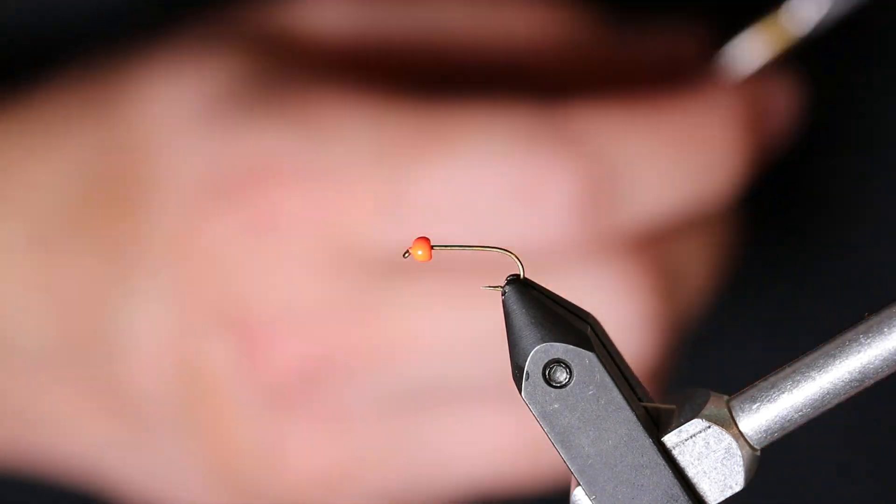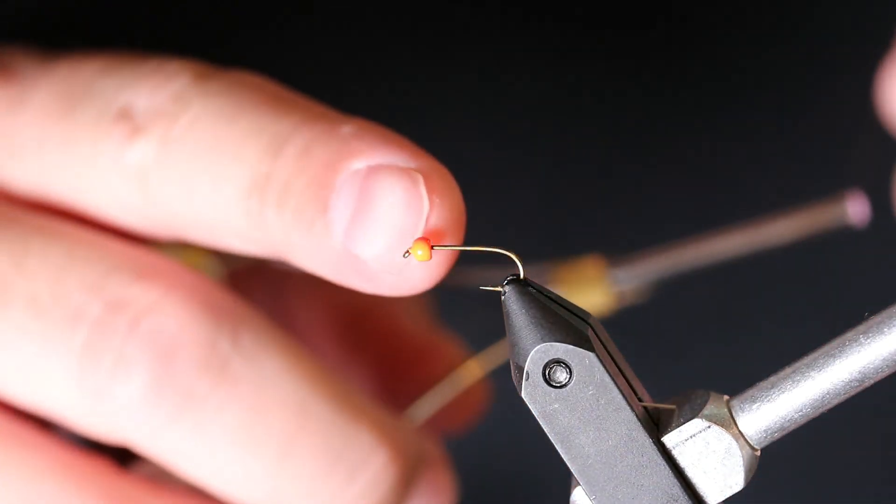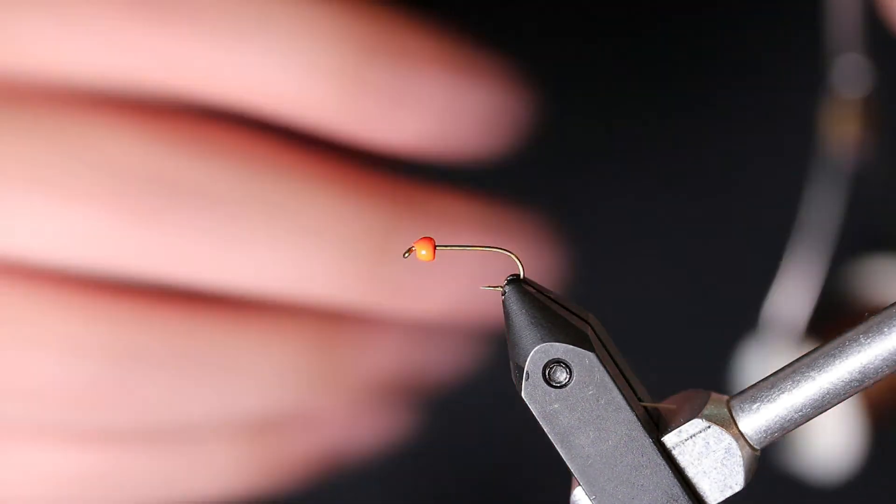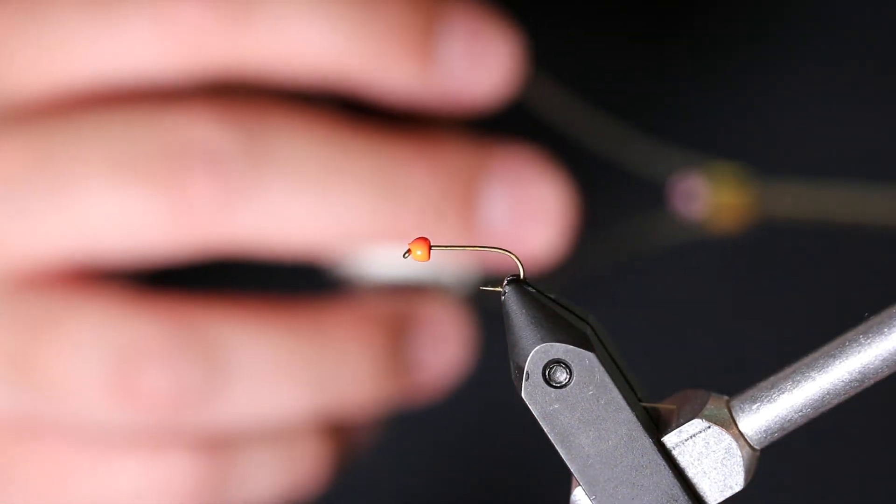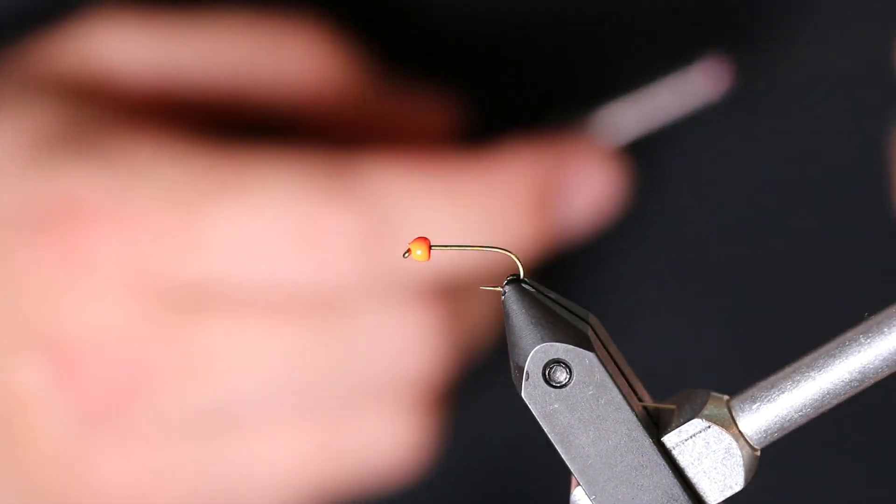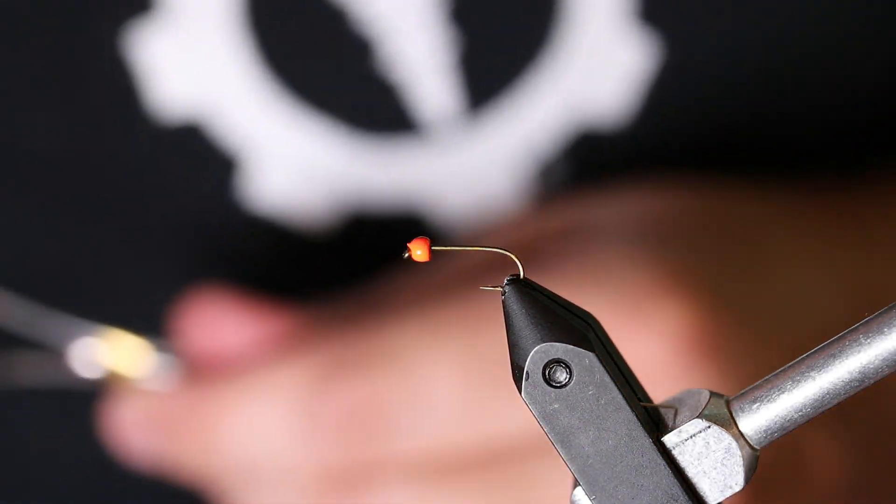We are going to be using a size 14 nymph hook, a 2.4mm orange bead, some brown thread, we are using red pheasant tail and gold fibers, and we will also be using peacock hurl.